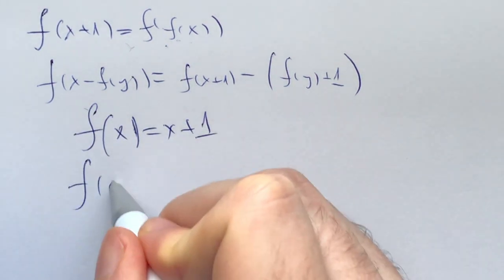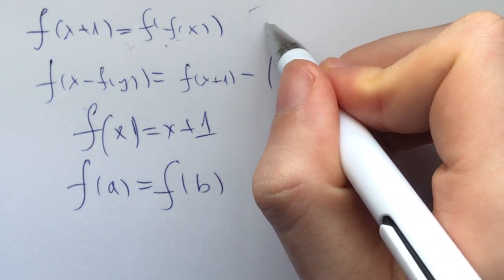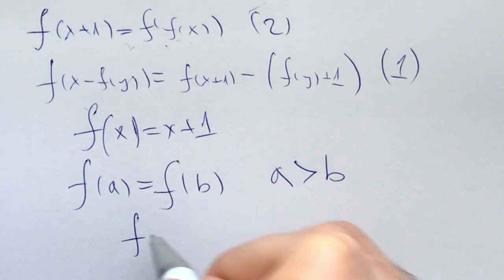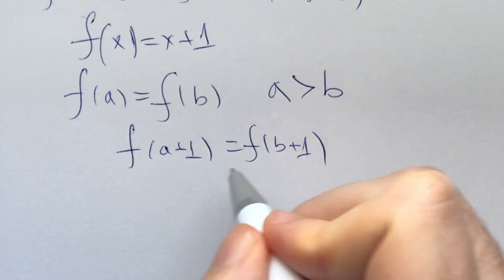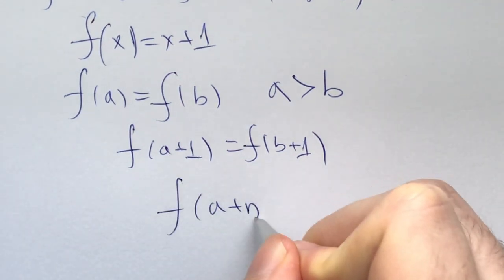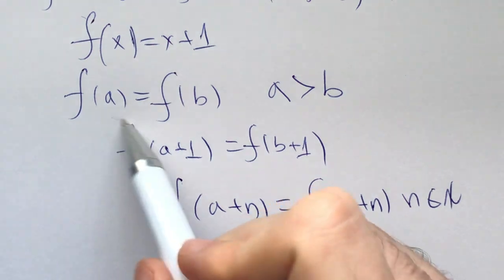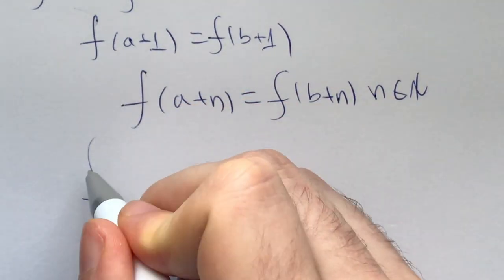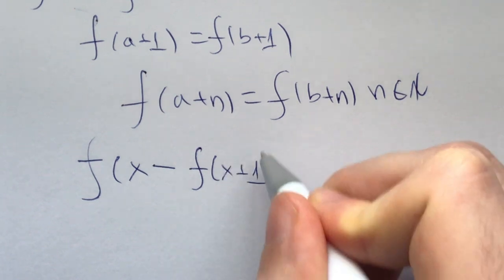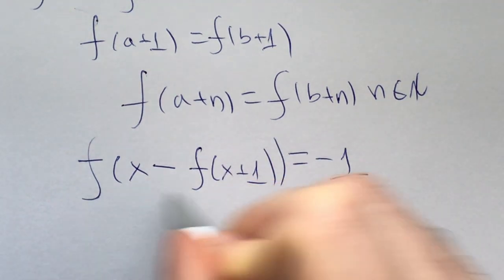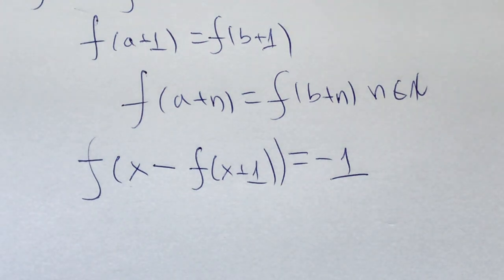By our result, let's call it equation 2, we get that f of a plus 1 is equal to f of b plus 1. Inductively, f of a plus n is equal to f of b plus n, where n is any natural number. The real motivation for trying to prove an injection is: we know f of x minus f of f of x, which is f of x plus 1, equals minus 1. So if the function is injective, this is always a constant, making f linear, which solves the problem.